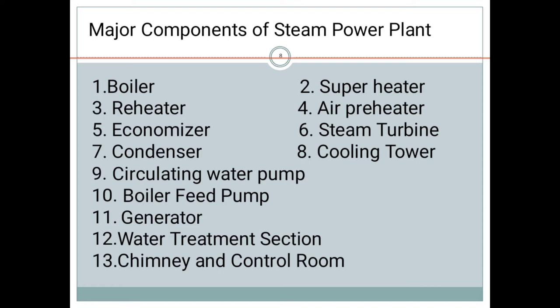Boiler is a steam generator which is used for generating the steam. And it is having the accessories and mountings. With the help of accessories, the steam is generating. Examples: economizer, super heater, air preheaters. These are the accessories of the boiler. And mountings are helpful for safety purposes. Example, water level indicator, pressure gauge, steam separator, etc.